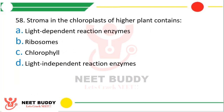Question 58. The stroma of chloroplasts of higher plants contains: light-dependent reaction enzymes, ribosomes, chlorophyll, or light-independent reaction enzymes? The correct answer is option D — light-independent reaction enzymes.